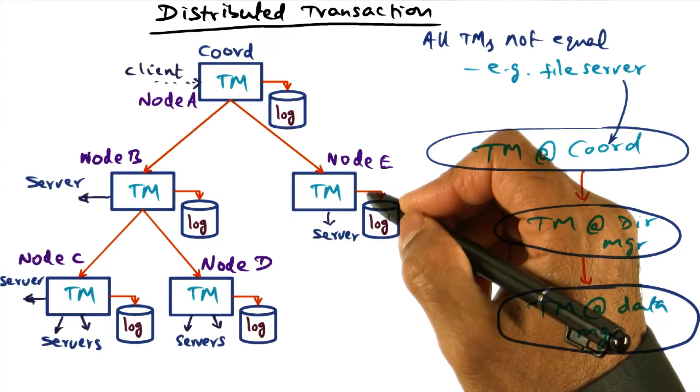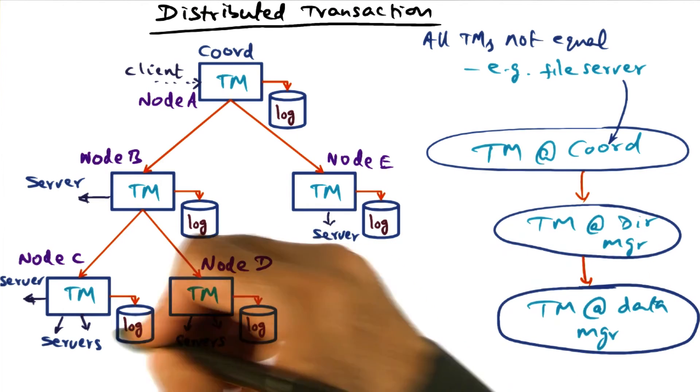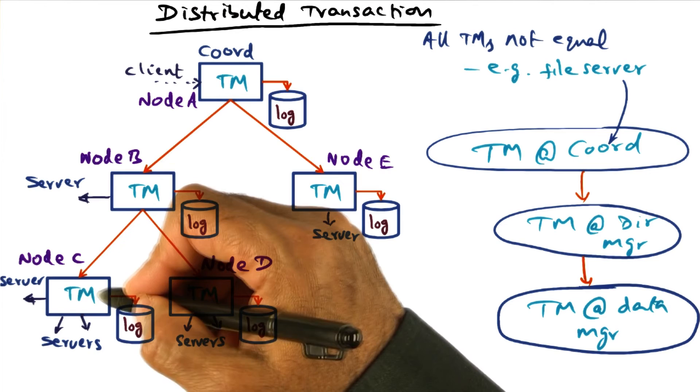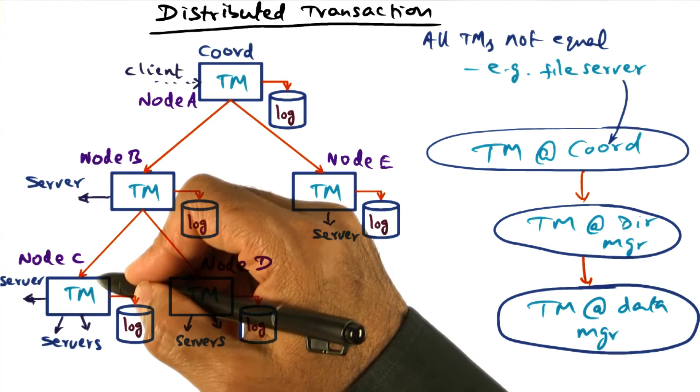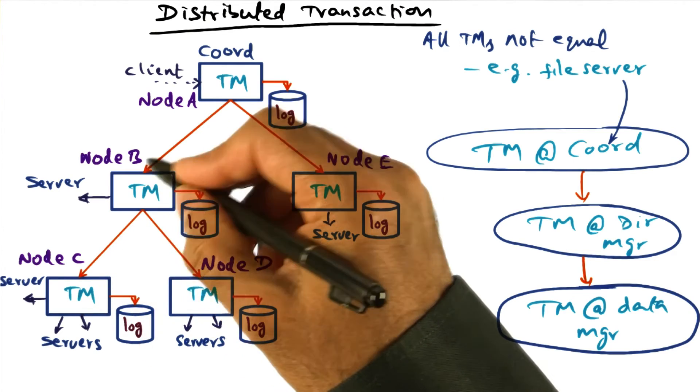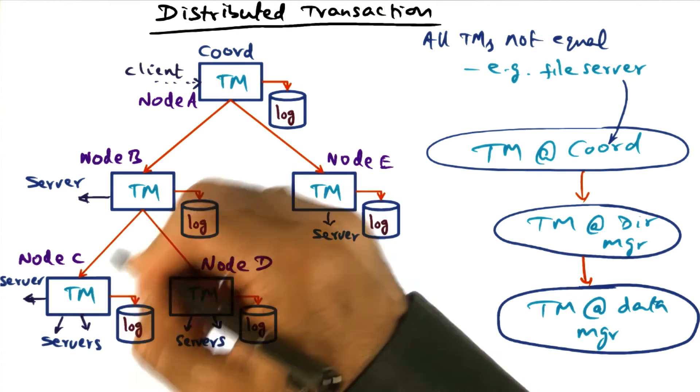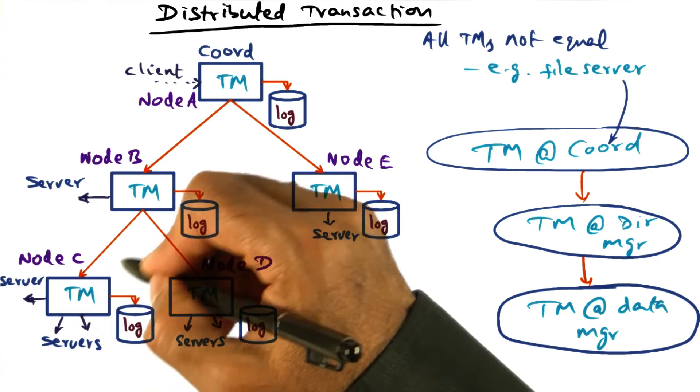So in a distributed system, failures can happen at any point. If, for instance, this node fails, then the transaction manager at this node has also failed. And this is something that this transaction manager is going to find out about because it doesn't hear any response from this transaction manager.